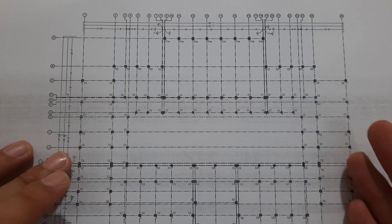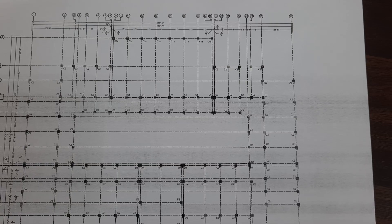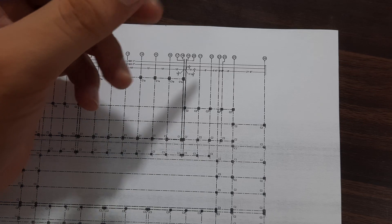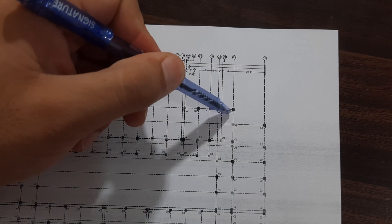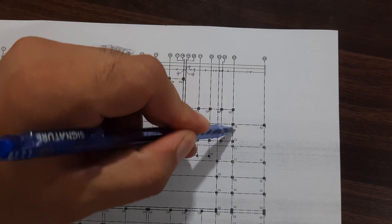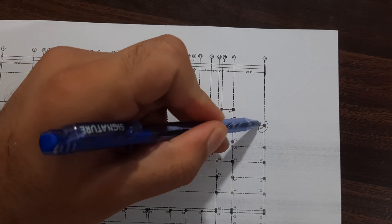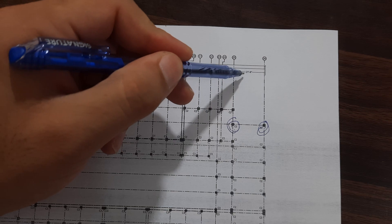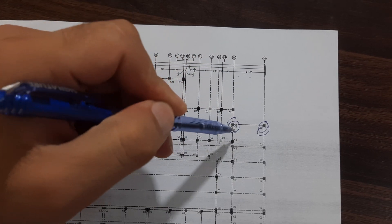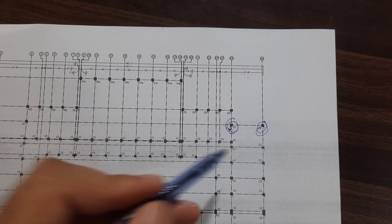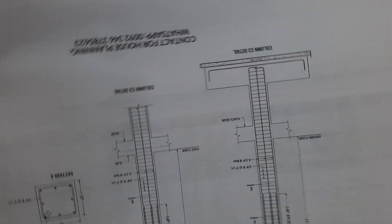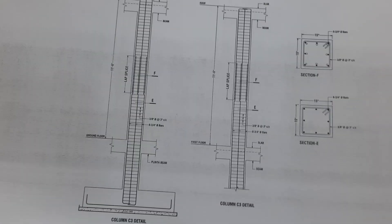If you have this kind of drawing, let me guide you for C2 detail. If you see here, this is C2 detail. Look here — this is C2, C2, and this is also C2. The span between C2 columns is 21 feet and 6 inches. Let me guide you for its size and details.